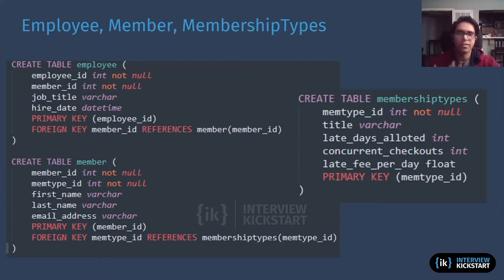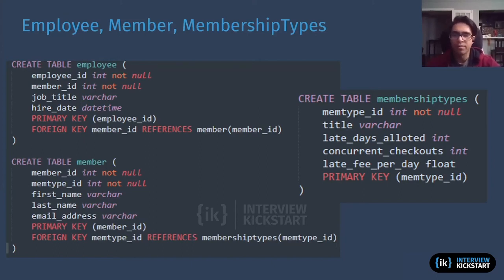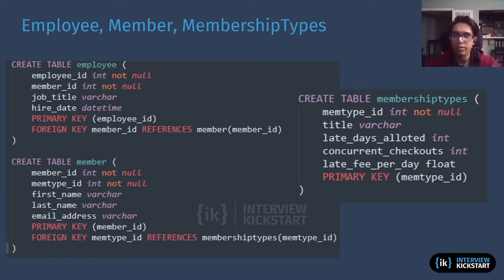This first section is basically keeping track of the employee, member, and membership type tables. The library is going to have members, members are going to have different membership types, membership types have the different rules — meaning the late days allocated, concurrent checkouts, the late fees they're paying per day. And then the library also has employees who have a certain type of membership.